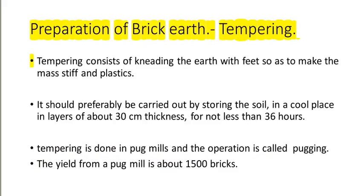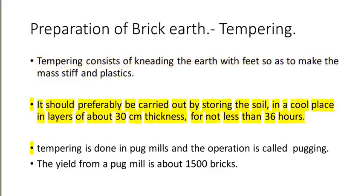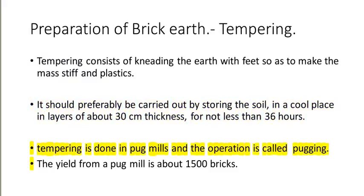Preparation of brick earth — Tempering. Tempering consists of kneading the earth with feet so as to make the mass stiff and plastic. It should preferably be carried out by storing the soil in a cool place in layers of about 30 cm thickness for not less than 36 hours. Tempering is done in pug mills and the operation is called pugging. The yield from a pug mill is about 1500 bricks.